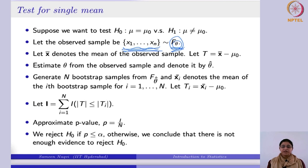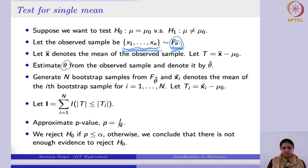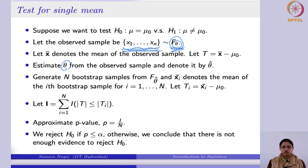When you are taking the bootstrap samples, you will not consider that they are coming from Poisson with parameter theta, but rather you will substitute the estimated value, and from there you will be generating the samples again and again. That is the minor difference from the non-parametric to the parametric setup.